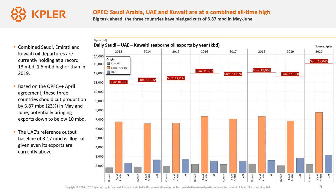Another point worth highlighting is that the reference output numbers used by OPEC can be very dodgy. For instance, the UAE's reference production number on which they based their pledged cut is 3.1 million barrels per day, while if we look at their exports they're actually exporting above this level — let alone the fact that they also produce oil and condensate for domestic demand of about 800,000 barrels per day. So they're actually much higher than what they're using as a reference.